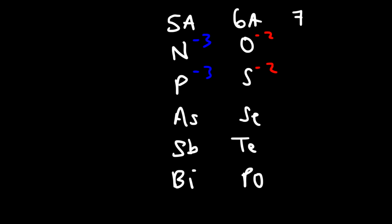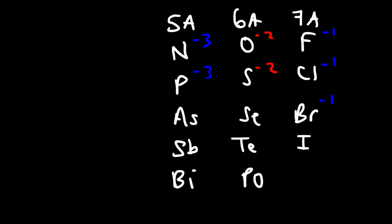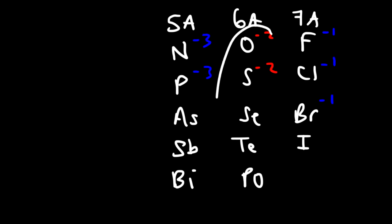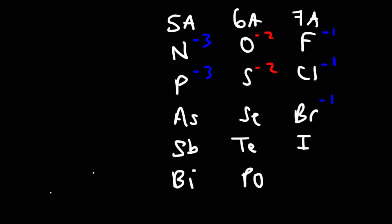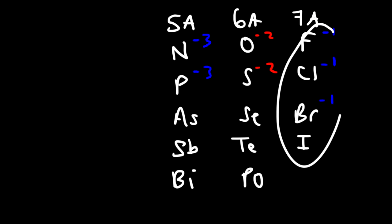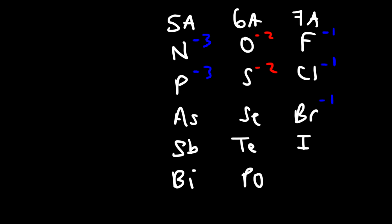In group 7A you have the halogens — fluorine, chlorine, bromine, and iodine — which like to form negative one charges. Group 5A elements have five valence electrons, group 6A elements have six, and group 7A elements have seven valence electrons. Valence electrons are the electrons in the outermost energy level, which we'll talk more about later.